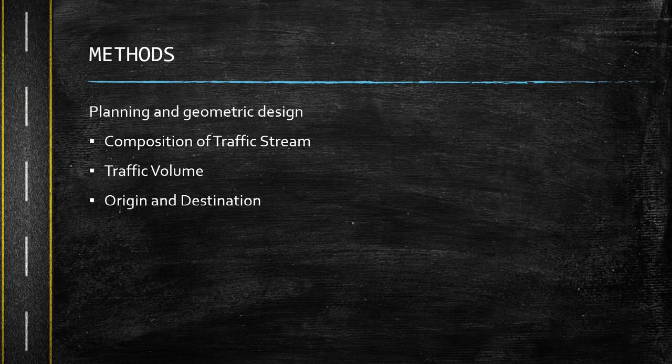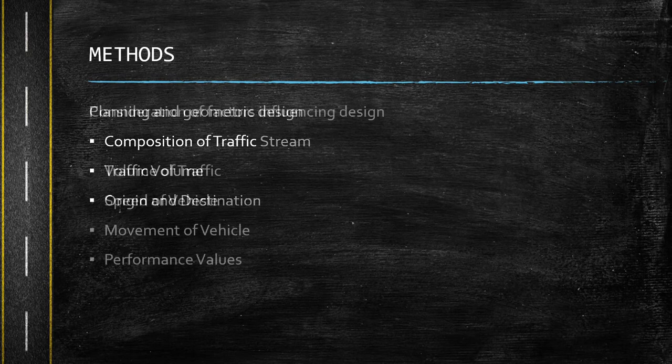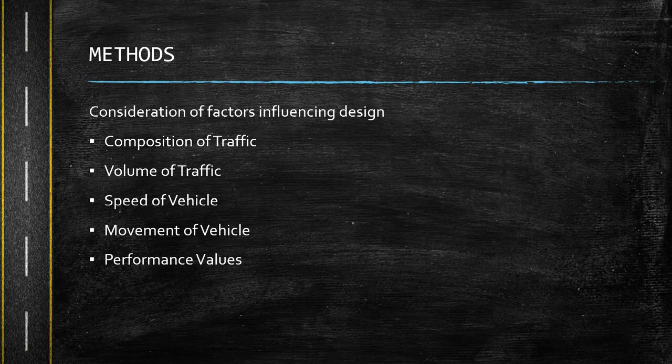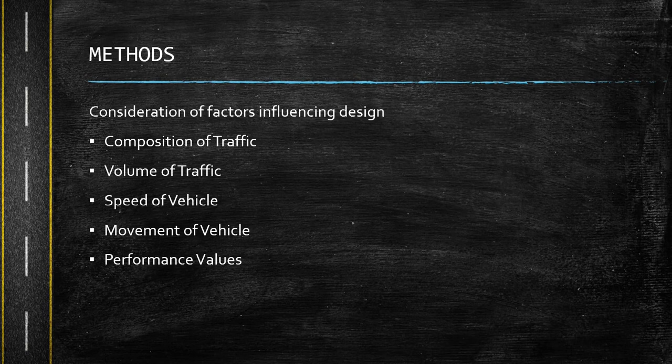The methods in planning and geometric design include the composition of traffic stream, what is the traffic volume that can be occupied or accommodated by the road, and the origin and destination of the roads and highways. For consideration of factors influencing design, there is the composition of traffic — whether pedestrians, motor vehicles, or automobiles — the volume of traffic, the speed of vehicle, the movement of vehicle, and the performance values.